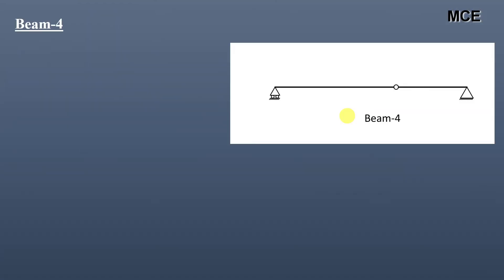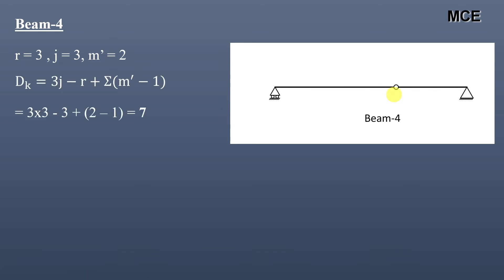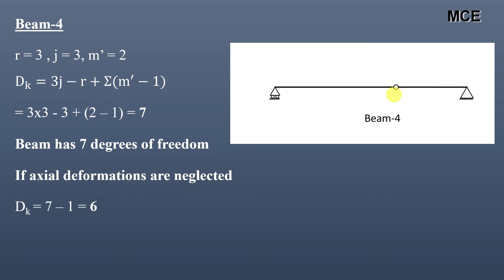For beam four, there are three reactions, three joints, and one internal hinge, so m′ = 2. The value of dk = 7, meaning the beam has seven degrees of freedom. There is one member in the beam, so if axial deformations are neglected, dk = 7 − 1 = 6.